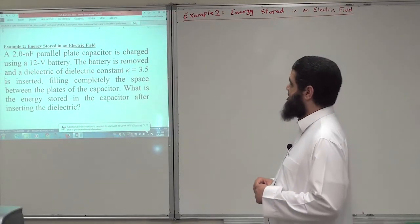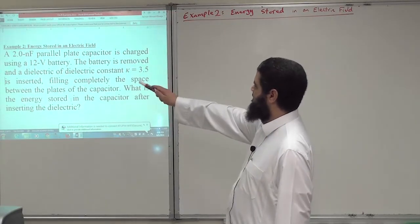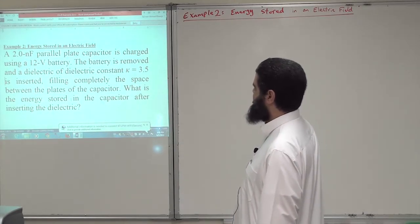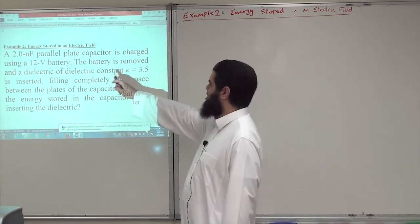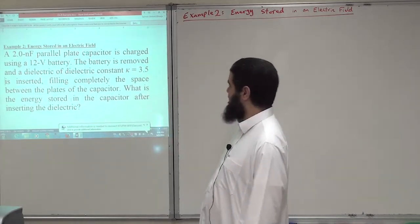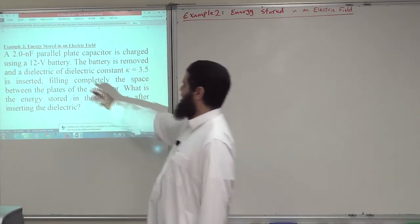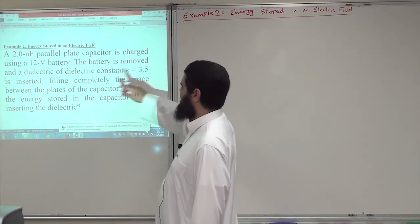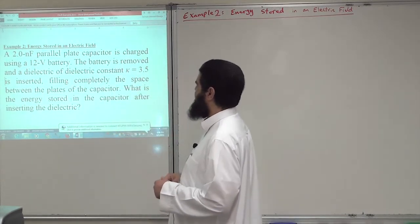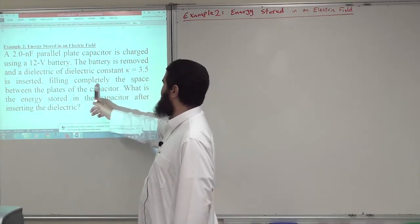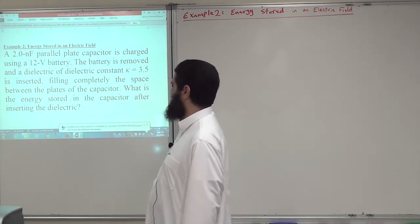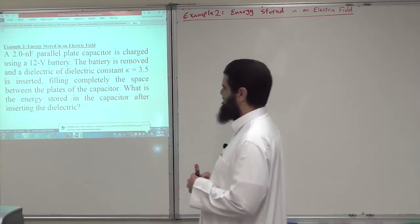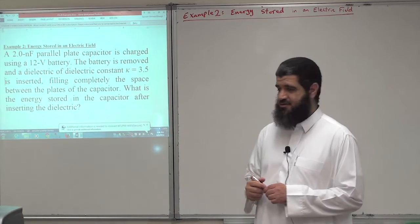This is the second example. We have a 2 nanofarad parallel plate capacitor charged using a 12 volt battery. The battery is then removed. A dielectric of dielectric constant κ = 3.5 is inserted in the space between the two parallel plates, filling completely the space. What is the energy stored in the capacitor after inserting the dielectric?